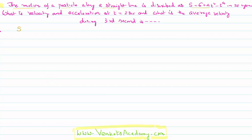It is given that displacement of a particle is given as S = 6 + 4t² − t⁴, in SI units. Now we want to calculate velocity first, and acceleration at t = 2 seconds.